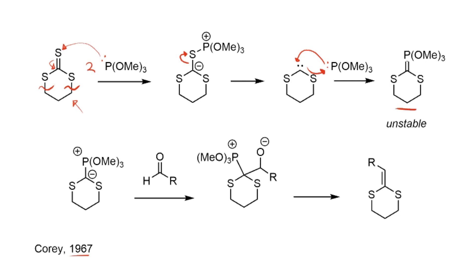The carbene reacts with a second equivalent of trimethylphosphate to give an unstable ylid product. This intermediate couldn't be separated from byproducts and had to be made and used in situ. These ylids can be drawn as the double-bonded form or the charge-separated form. They react essentially like Wittig reagents — the negative charge adds into a carbonyl, electrons go up onto the oxygen, and then we get collapse of the intermediate to give the double bond in the product.